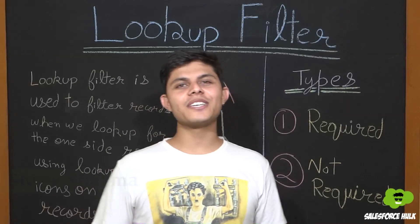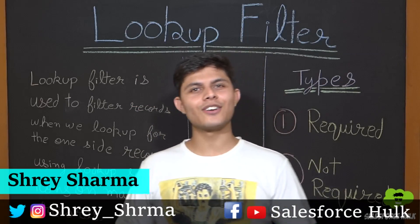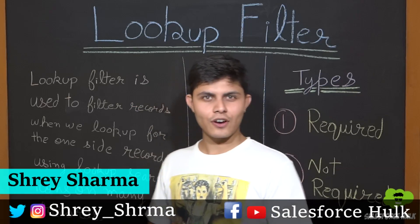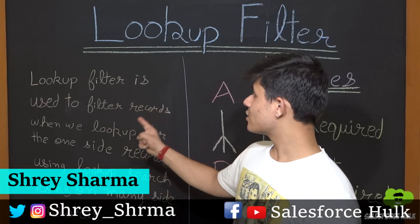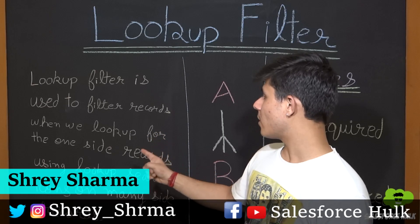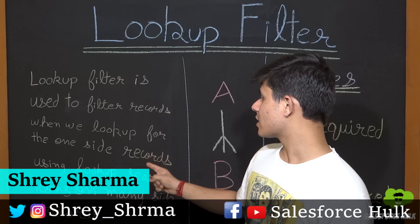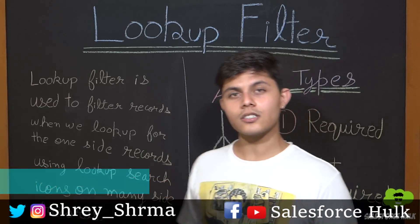Here I am introducing lookup filters to you. First of all, let's look at the definition of lookup filters. A lookup filter is used to filter records when we look up for one-side records using the lookup search icon on the many-side records.